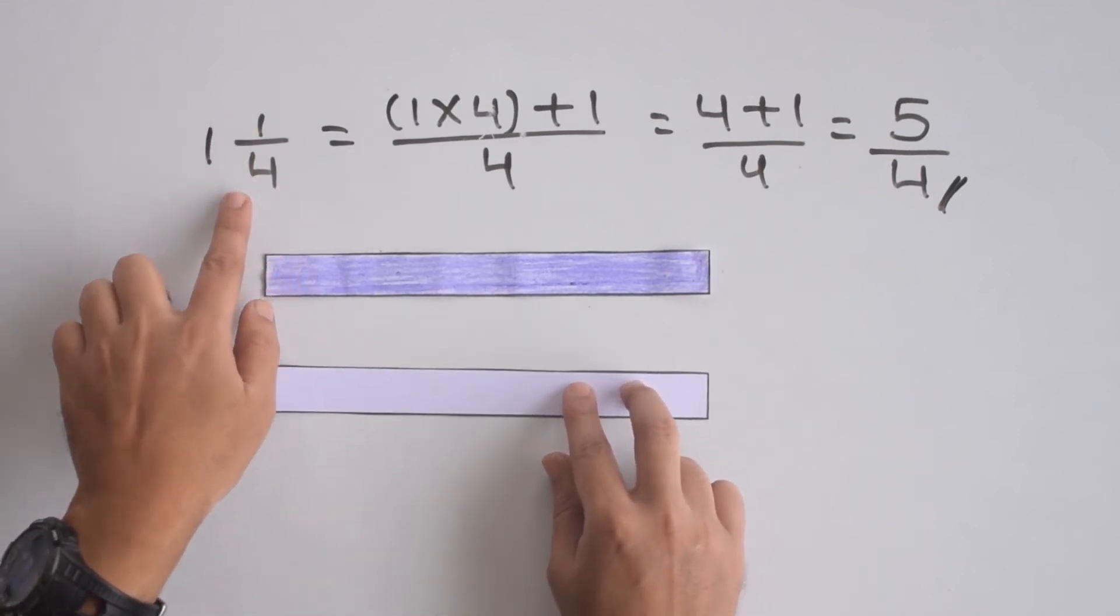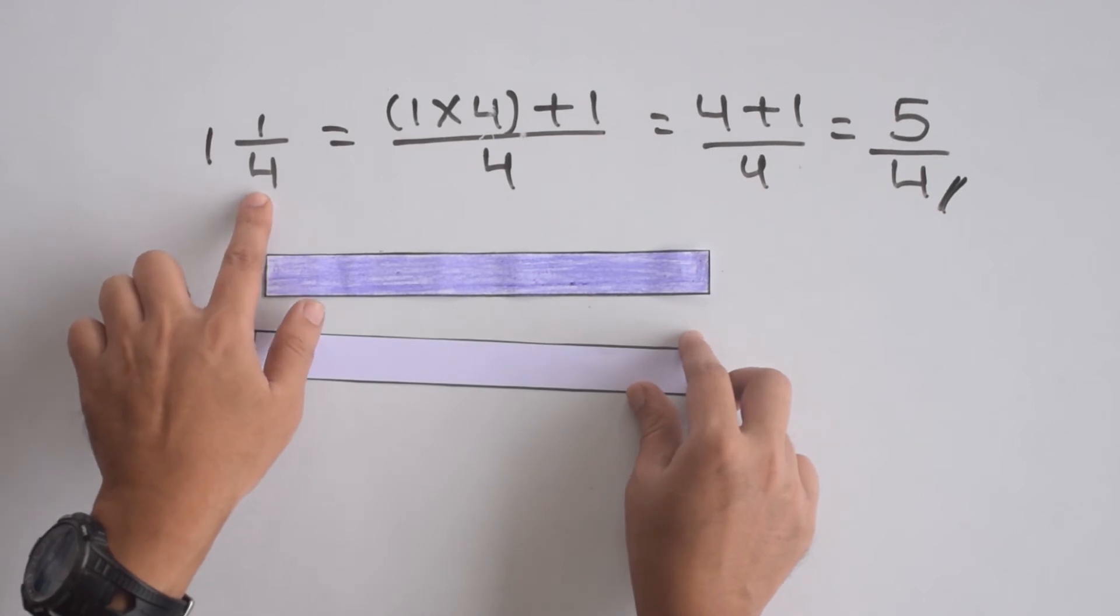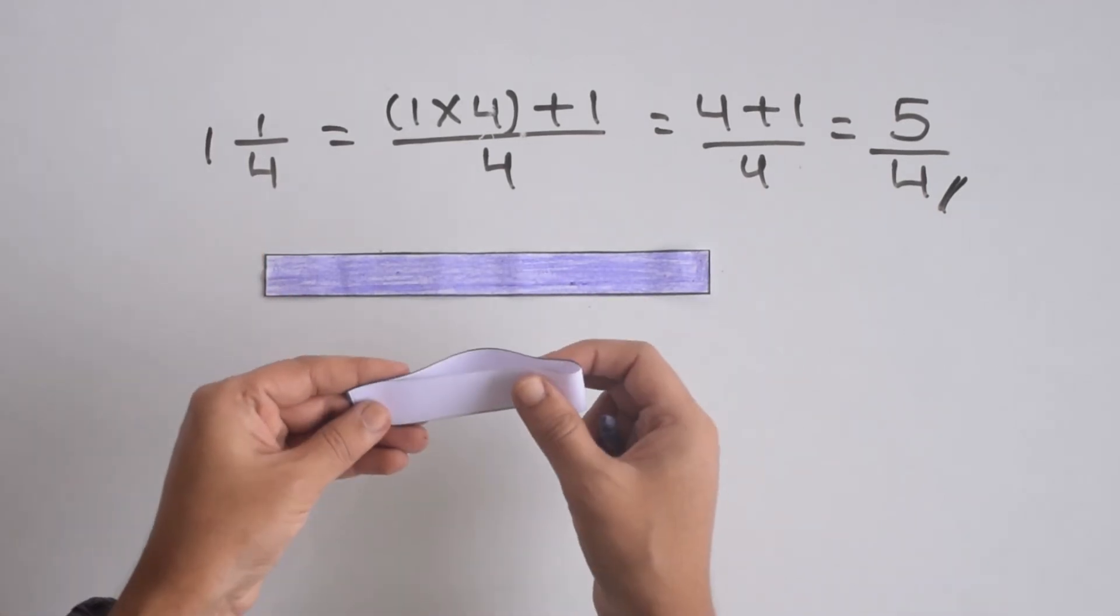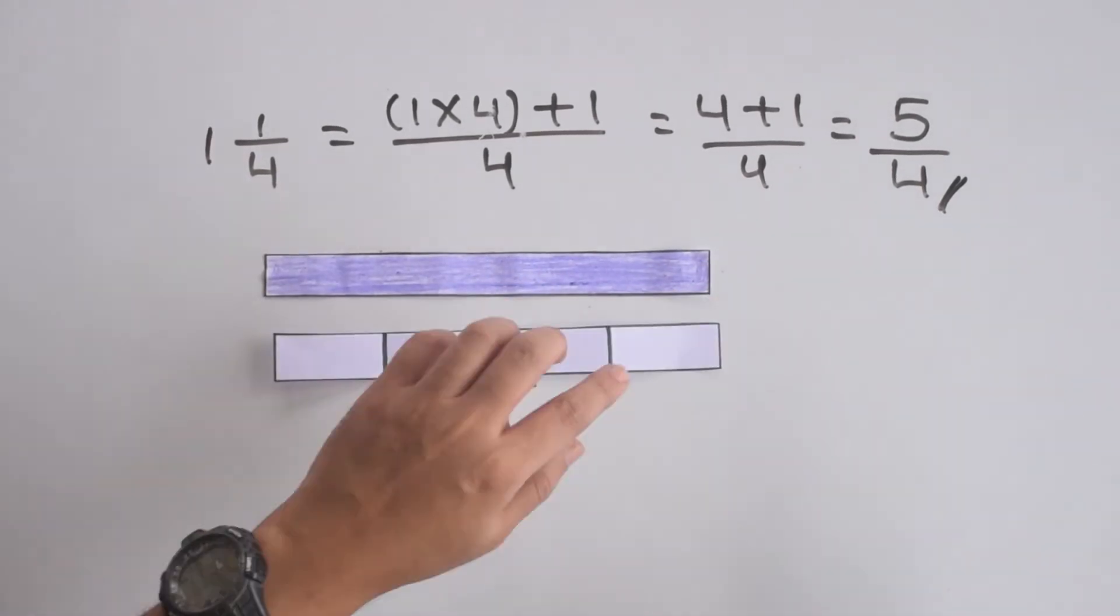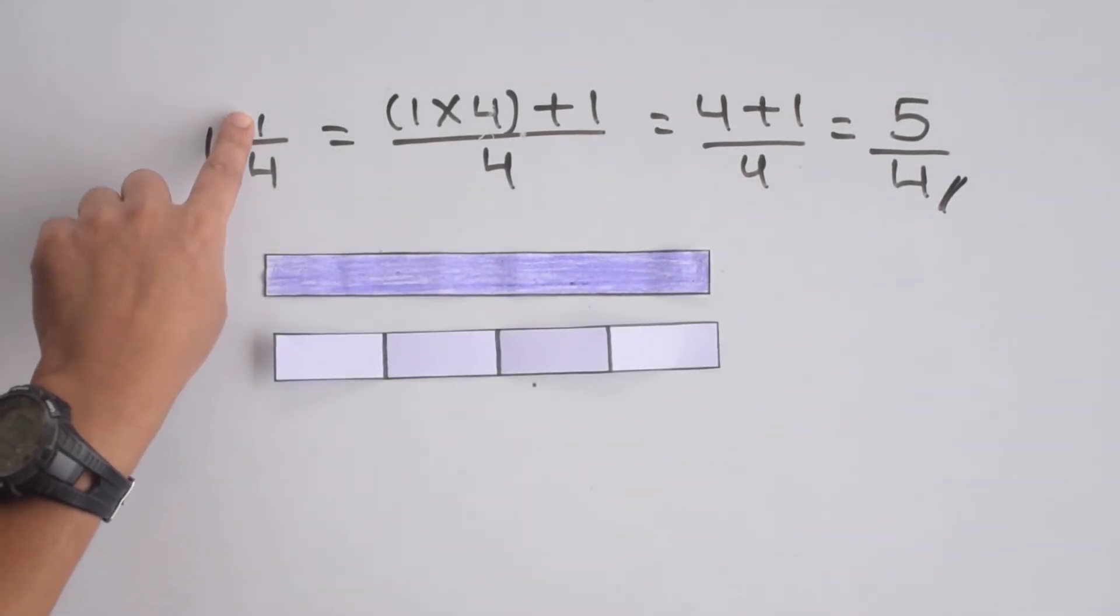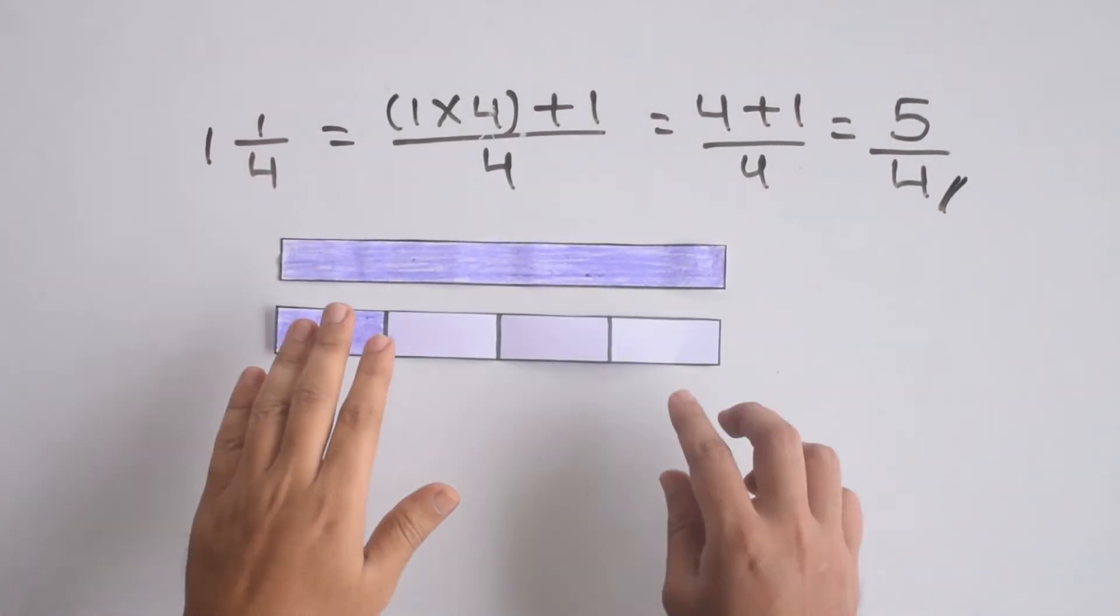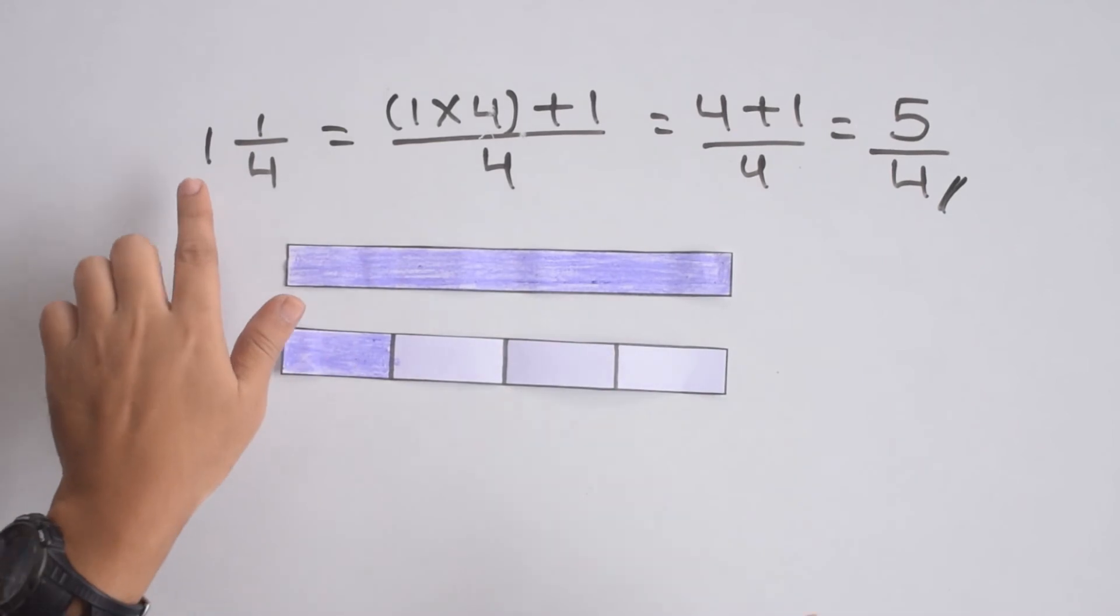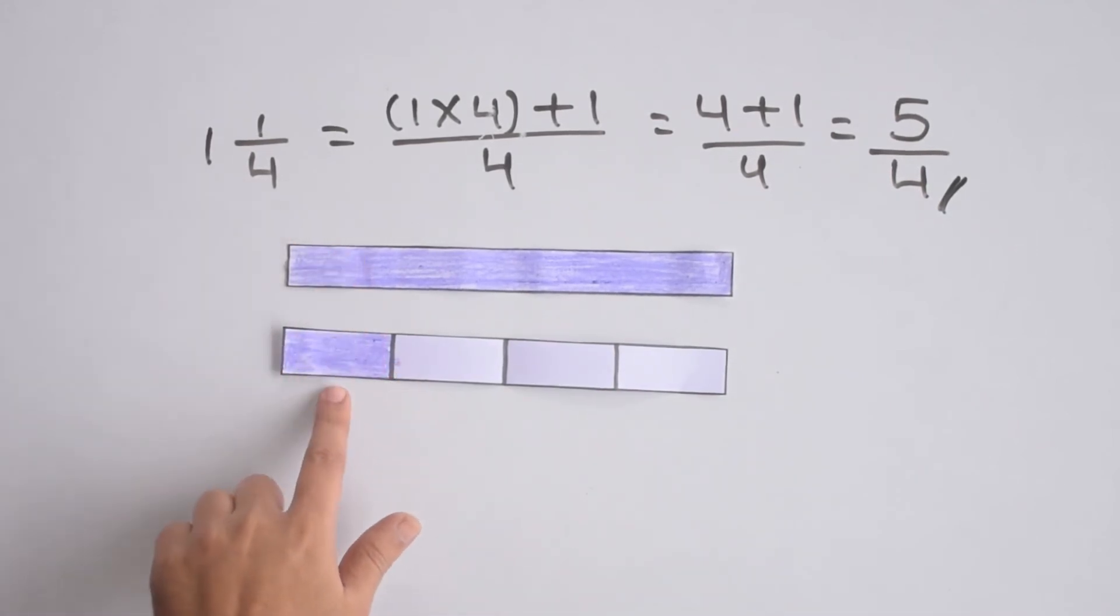For the 1/4, we'll take another strip and since the denominator has four parts, we'll fold this into 4 parts and color 1 part because the numerator is 1. Here we have represented the mixed fraction 1 1/4 with these paper strips—this is 1, this is 1/4.